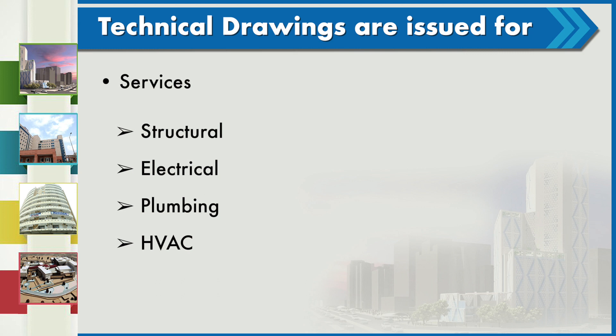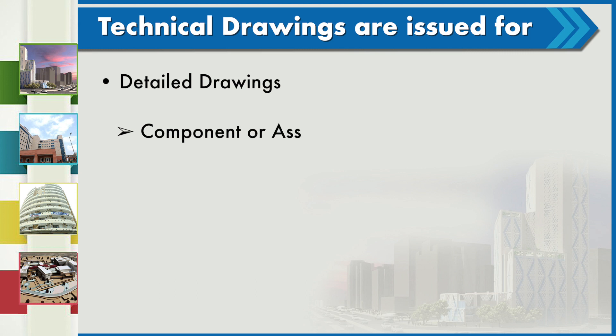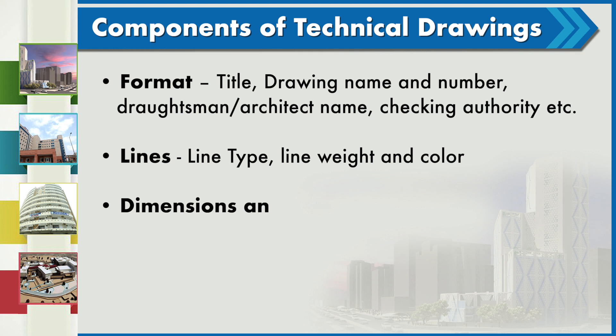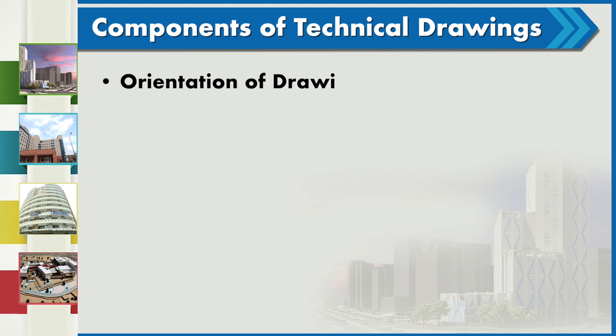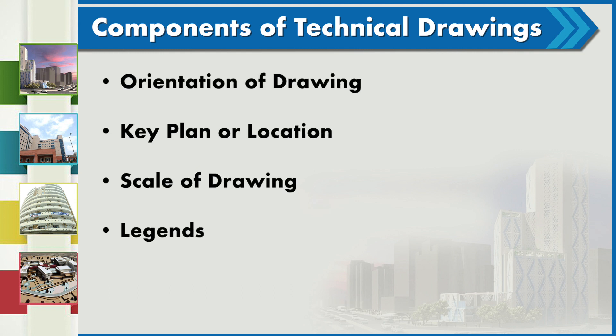We also have HVAC drawings, detailed drawings, component drawings, and shop drawings provided by vendors. How to read technical drawings: there is a standard format which includes the title, drawing name and number, architect's name, and drafting person's name. There are specific line types and line weights for each type of information, as well as dimensions, labels, symbols, tags, specifications, and other details.